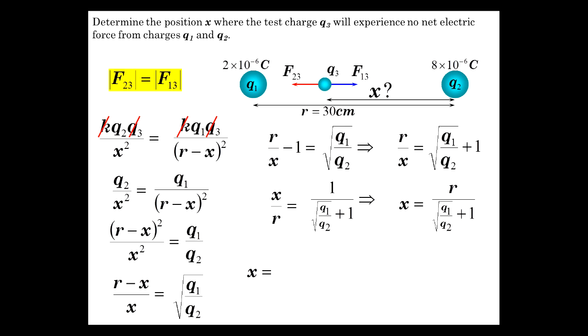Time to plug in numbers. X is 30 centimeters divided by... Q1 over Q2, 10 to the minus 6 goes away. We have 2 over 8, so plus 1 in the denominator. 30 over 1.5 gives us X being equal to 20 centimeters. So there you go. That's how you do that kind of problem.